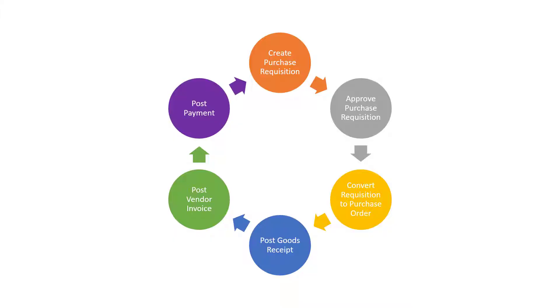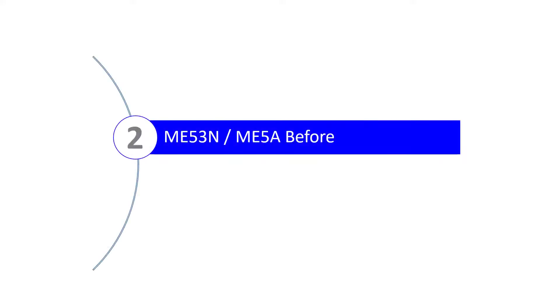Time permitting, we'll create a separate video for transaction ME59N. For the moment, we'll focus on the simplest scenario, that is, using transaction ME21N. So we've established where transaction ME21N fits in the Procure-to-Pay process. Now let's review the status of the purchase requisition in SAP prior to converting it into a purchase order using transaction ME21N.